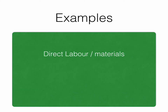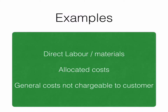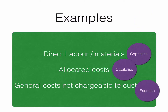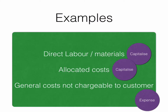Let's look at some examples: direct labour, allocated overheads, and general costs not chargeable to a specific customer. Direct labour on that particular contract relates directly to it and enhances the resource, so you capitalise it. Allocated overhead costs — the same thing. But general costs, like admin costs that are not explicitly chargeable to the customer, you would just expense those.